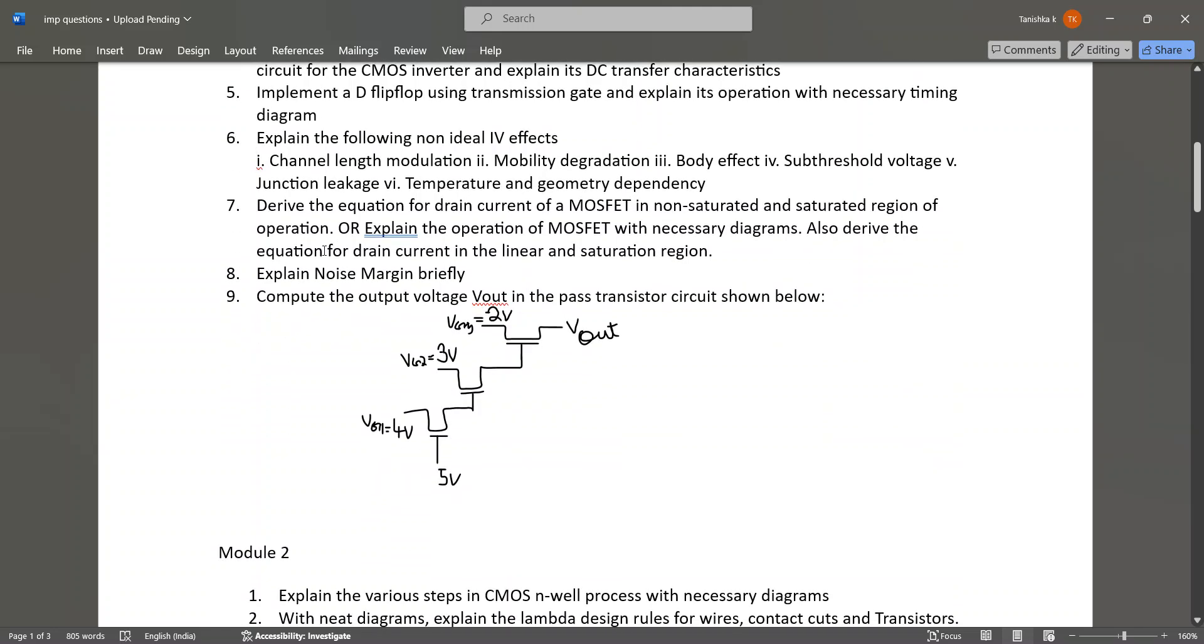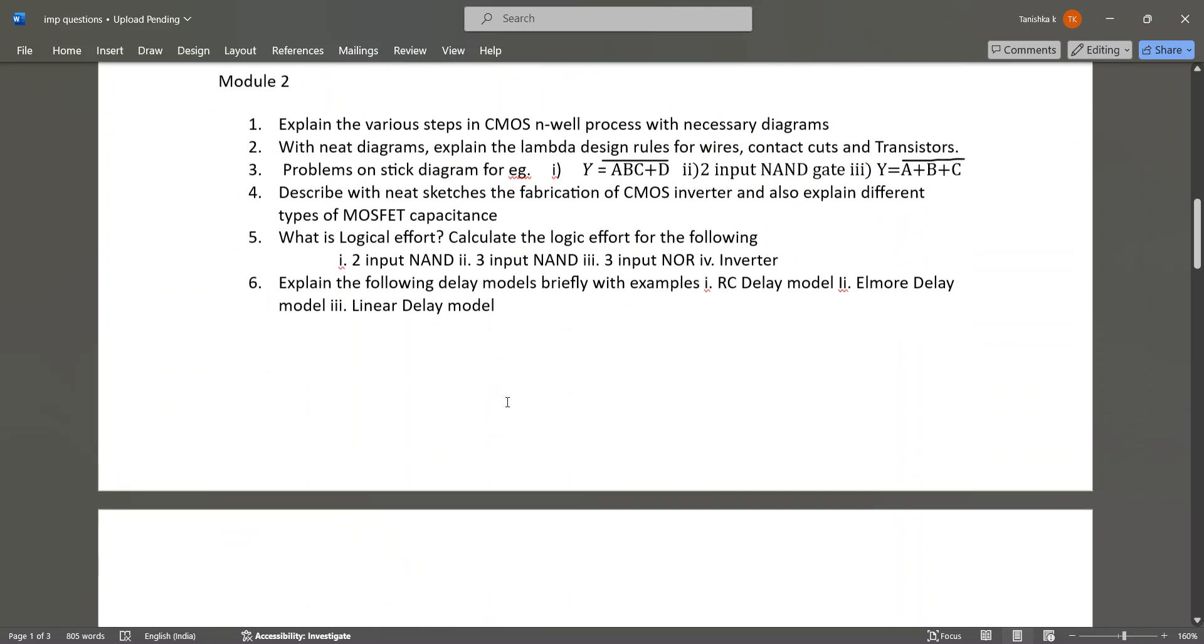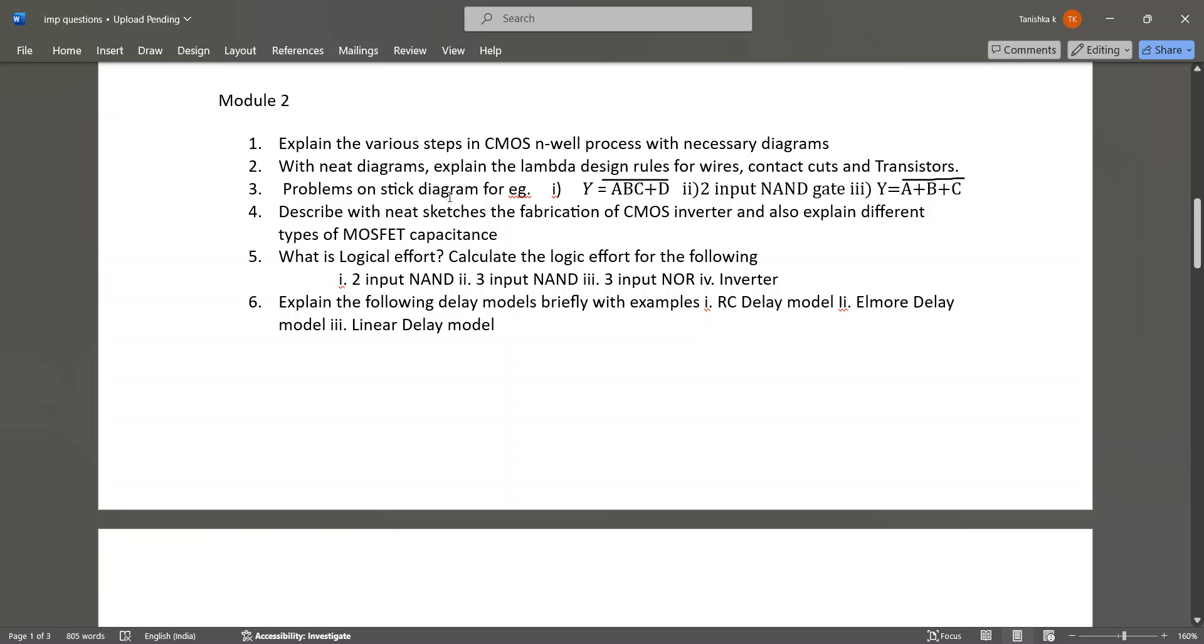Then explain noise margin briefly and calculate the output voltage Vout in the pass transistor circuit as shown below. The circuit has Vg1, Vg2, and Vg3 at 2 volt, 3 volt, and 4 volt and 5 volt, and this is Vout. In Module 2, the important questions are: explain the various steps in CMOS annual process with necessary diagrams.